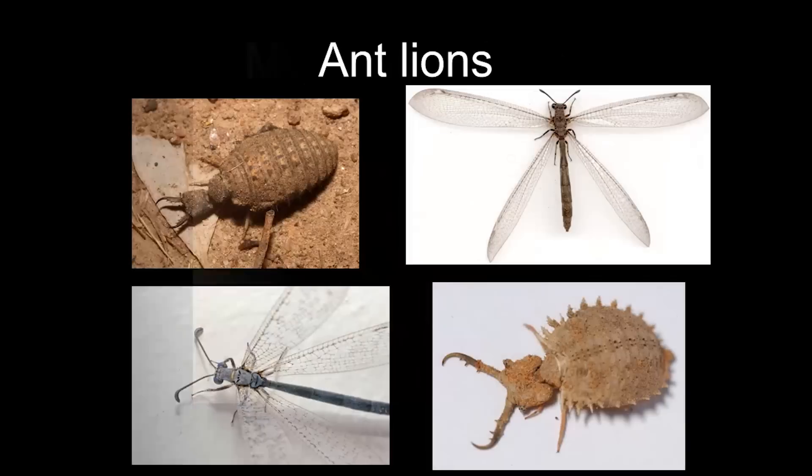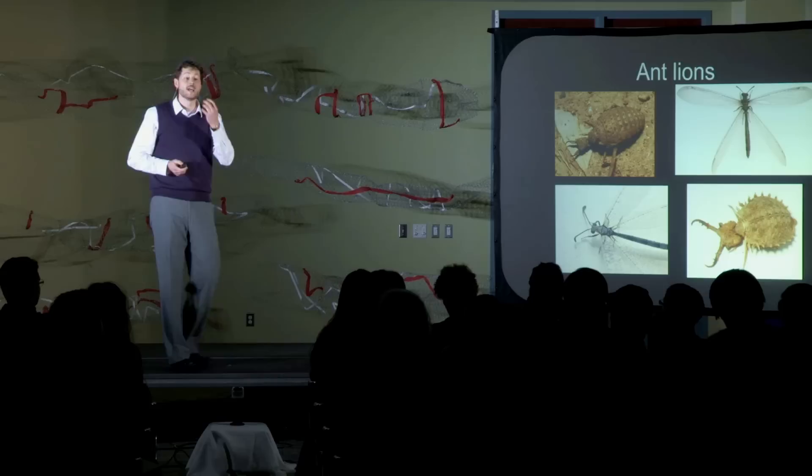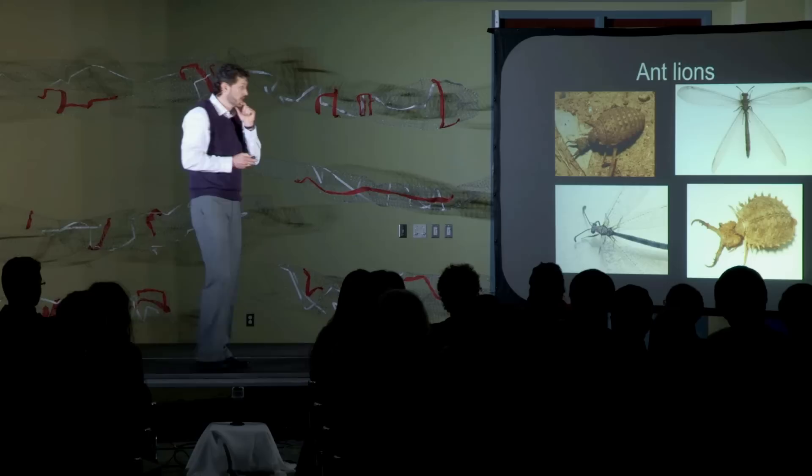These larvae dig pits and trap ants and grab them with jaws and suck them dry. This is our beastie right here. This is the larva of an antlion. The diversity of these things is really quite amazing. They are ubiquitous in their distribution. They're found on every continent outside of Antarctica. So literally, these little movie monsters can be in your backyard.